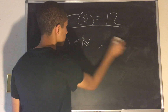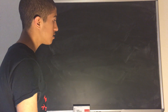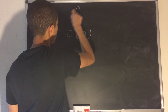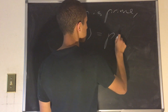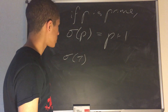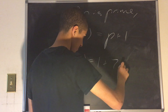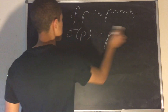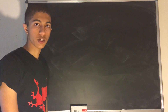Now let's take sigma of a prime number, just to follow up from d of a prime. Well, σ(p), if p is prime, equals p + 1. Why? If you had σ(7), then 7's divisors are only 1 and 7 itself, so you take 1 + 7 = 8, which is p + 1. Wonderful. That is a good description of little sigma, the sum of divisors function.